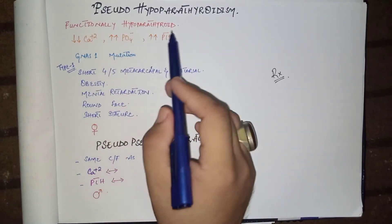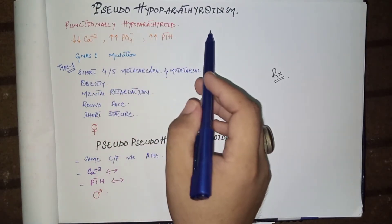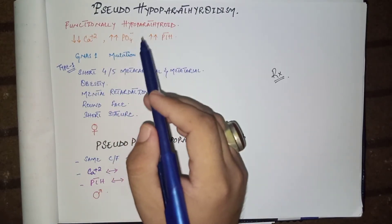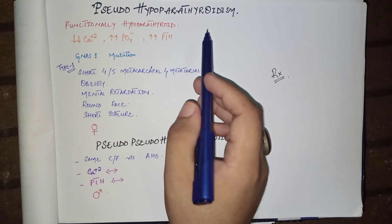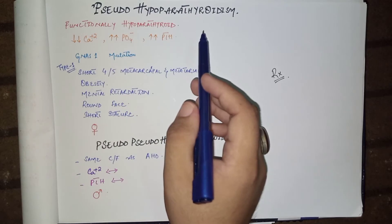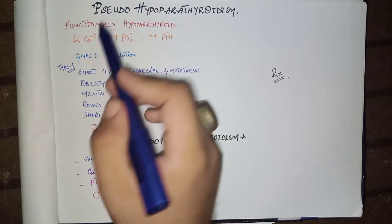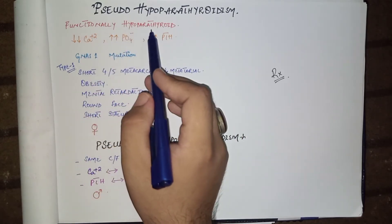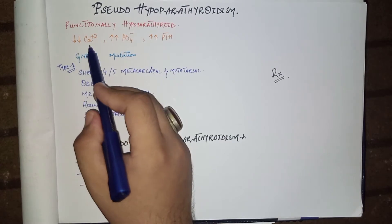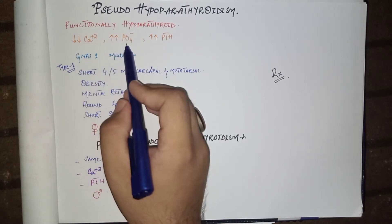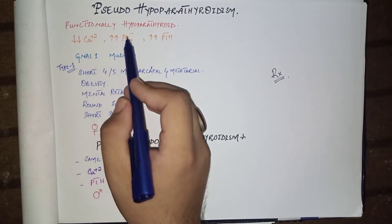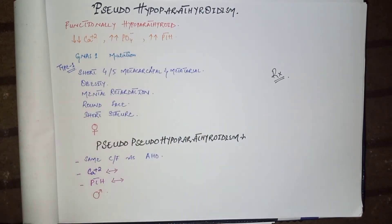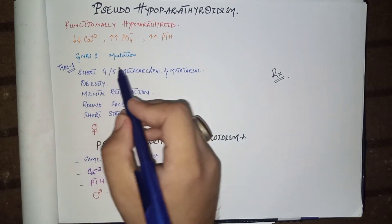The topic of discussion is pseudo hypoparathyroidism, a continuation of the previous video on hypoparathyroidism. In this case, the patient is functionally hypoparathyroid — that is, reduced calcium levels and increased phosphate levels as in hypoparathyroidism.